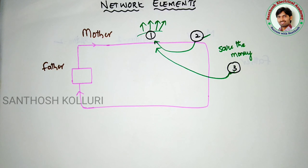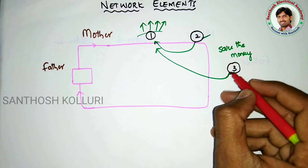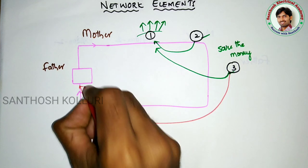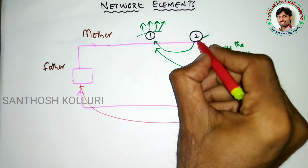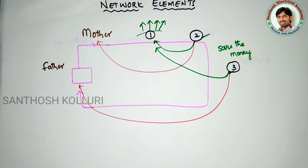The children cooperate with each other in the family. Among the three kids, one is closely associated with the father and one is closely associated with the mother. Now let us convert these five characters into our electrical terminology.